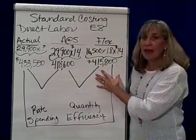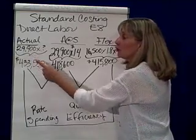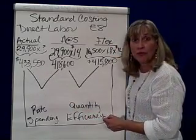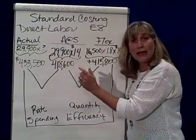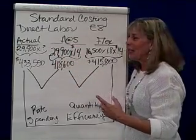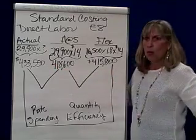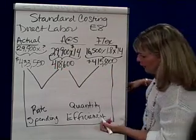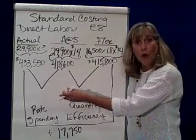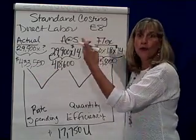We'll compare that with what we actually spent. The problem tells us we actually worked 29,900 hours, and that cost us $433,550. So comparing actual to the flexible budget, actual is more than the flexible budget — it's $17,750 more. And since you actually spent more than your budget, that's unfavorable. It's unfavorable because you exceeded your expectations — you overspent.